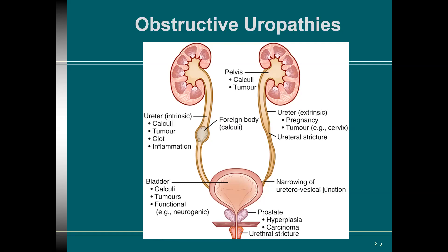Extrinsic causes include tumors, fibrosis, or prolapse of adjacent organs. For women in particular, prolapse of the uterus is often a problem, and you can even have prolapsing of the bowel pressing onto the bladder and beyond. Finally, functional causes include neurological or sometimes psychogenic factors that affect the system — you'll see that on the left of your screen at the bottom.